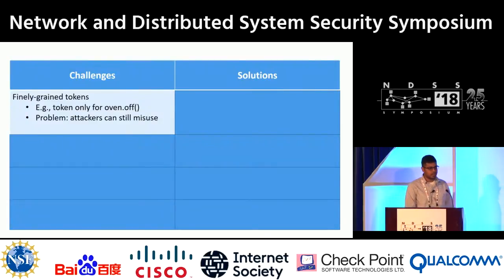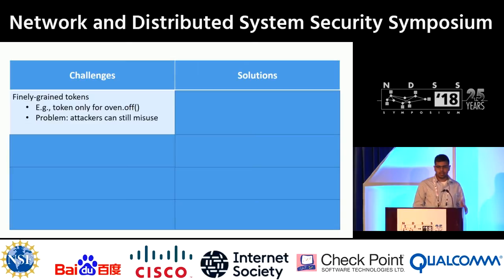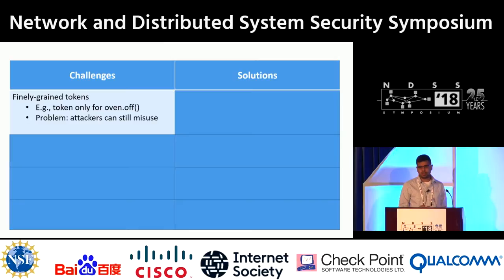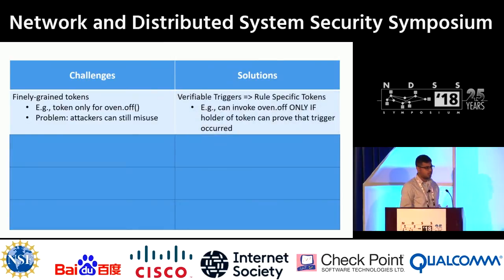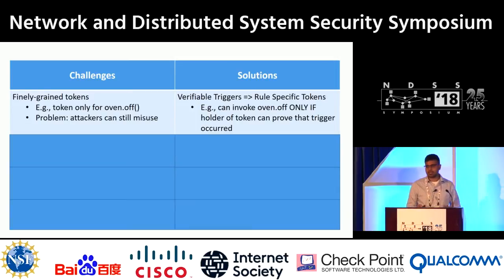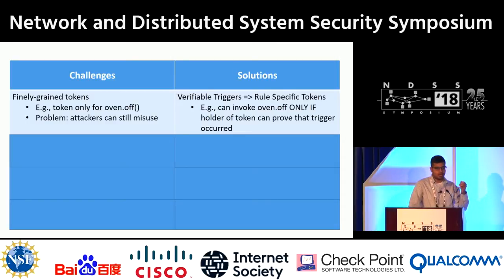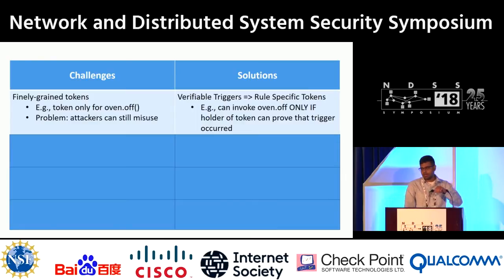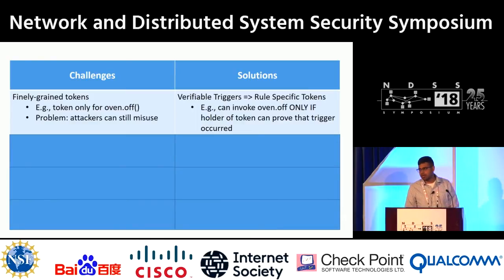The first challenge is that even though fine-grained tokens limit privilege, attackers can still misuse them in isolation. Our solution is to introduce the notion of verifiable triggers and rule-specific tokens. The high-level guarantee is: if you are the bearer of a token, you can only invoke the action associated with that token if you can prove that the corresponding trigger actually happened within some reasonable amount of time in the past.